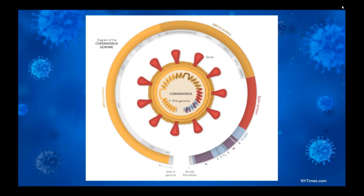We see in red, for example, the place in the genome where the code for building new spike proteins lies. This is a very important part of the genome as we think about variants.